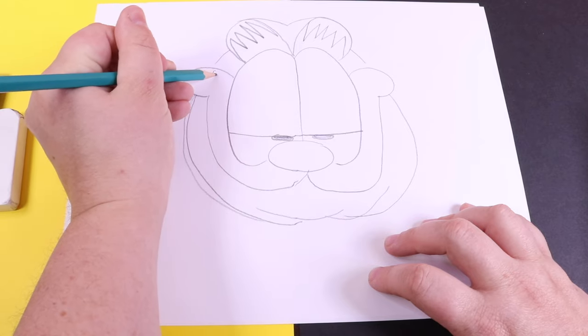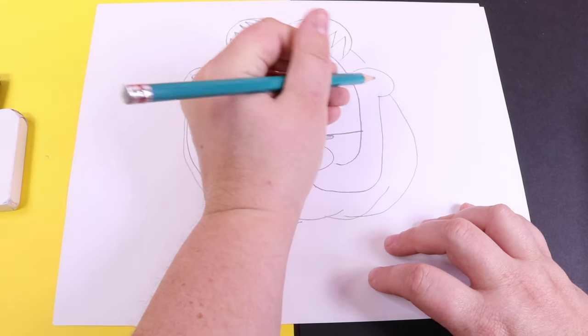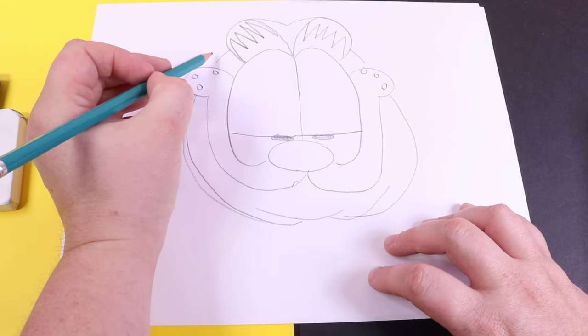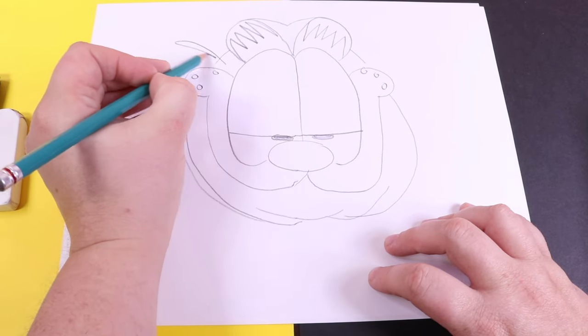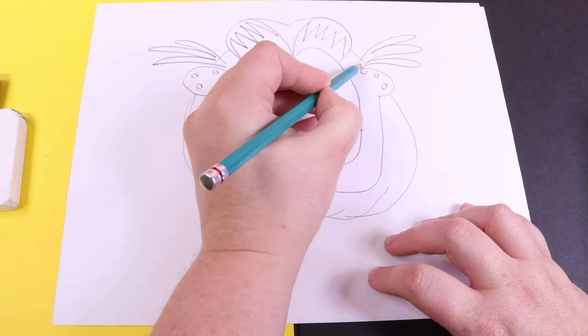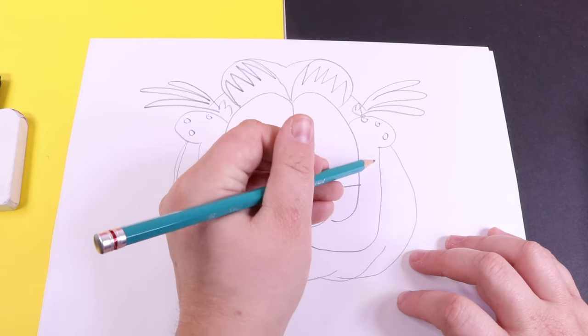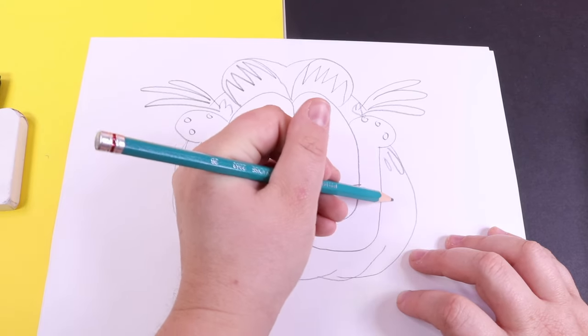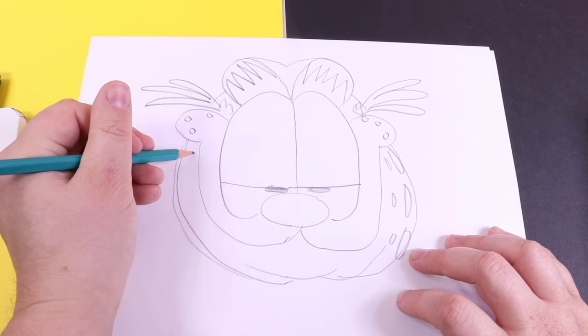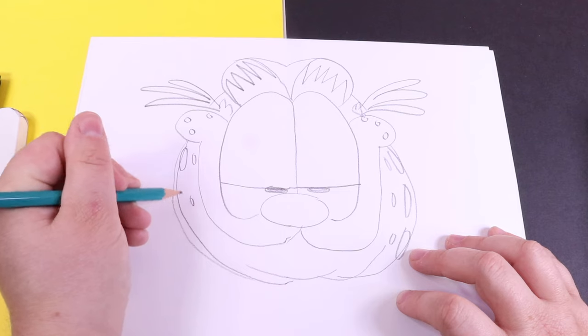He's got little black dots on either side here, and he's got a bundle of whiskers coming out from above. On Garfield's face, we've got a lot of little black shapes, so we're going to add these to both sides.